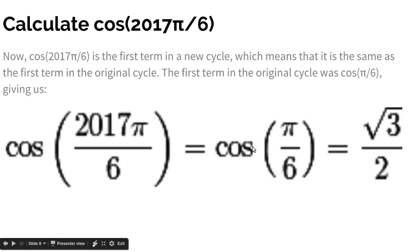And finally, cosine π/6 is radical 3 over 2. And that is our answer, radical 3 over 2.